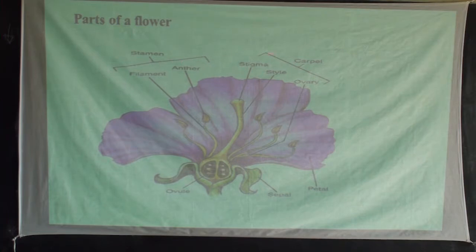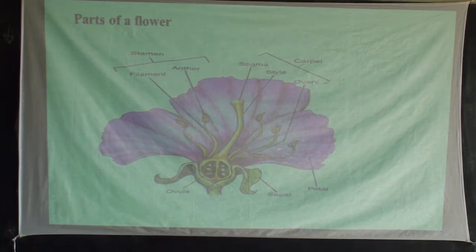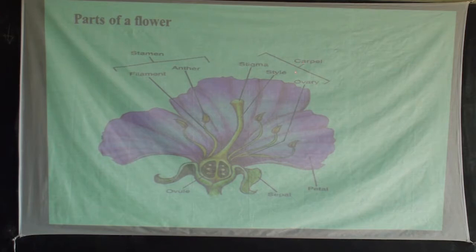When we come to this side, we have the stigma, the style, and the ovary. These three parts are given one name, and this name is carpel, or pistil. So the pistil, or carpel, is the female part of a flower.